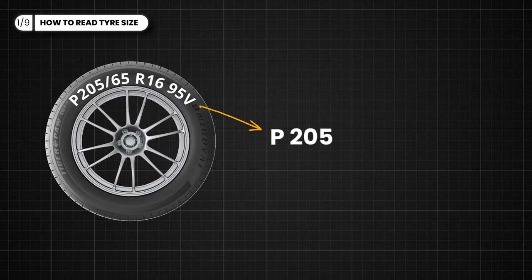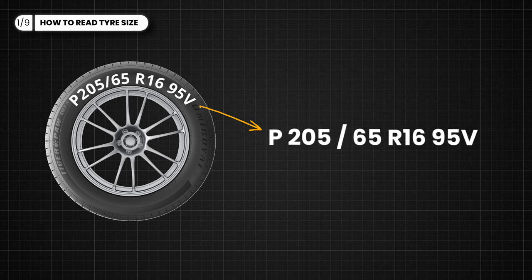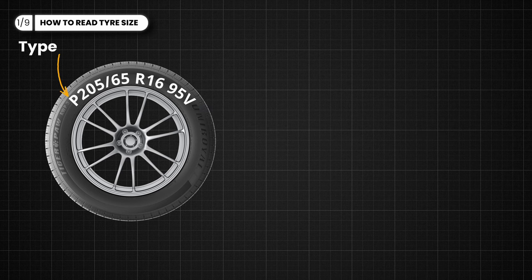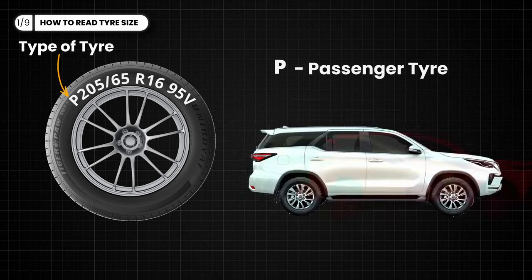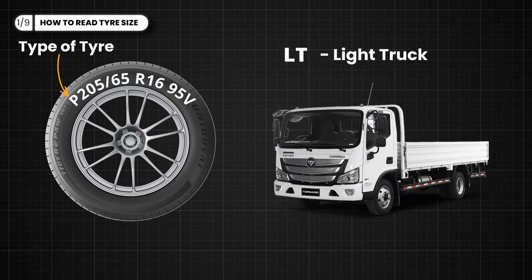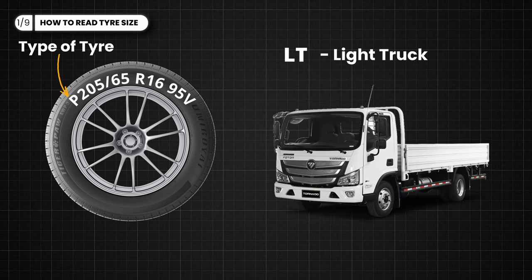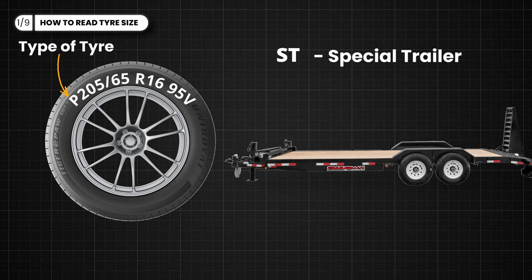The tire size is P205/65R16 95V. The first part — in this case P — indicates the type of tire. P stands for passenger tire, commonly found on cars and SUVs. Other letters, like LT for light truck, or ST for special trailer, denote specific tire types.